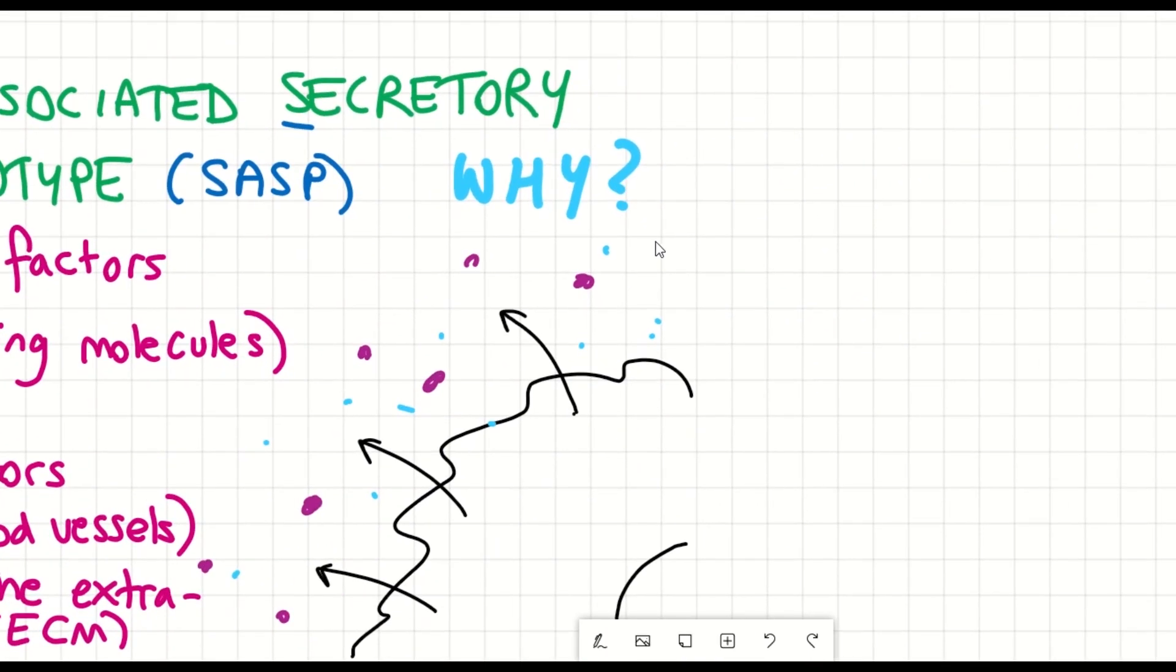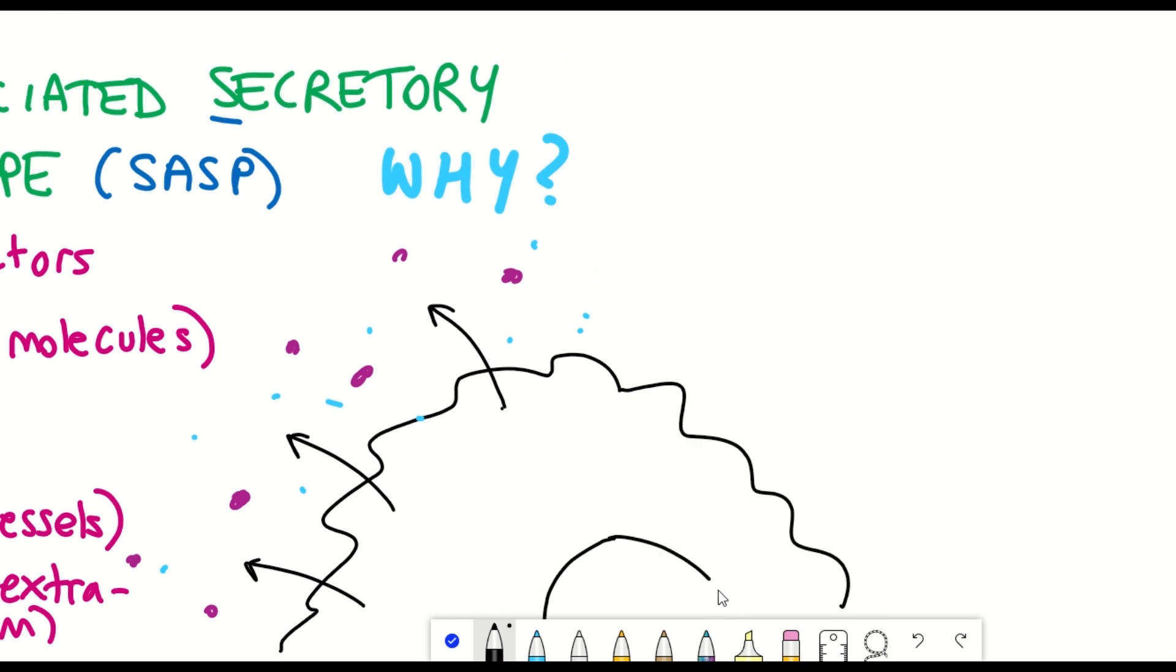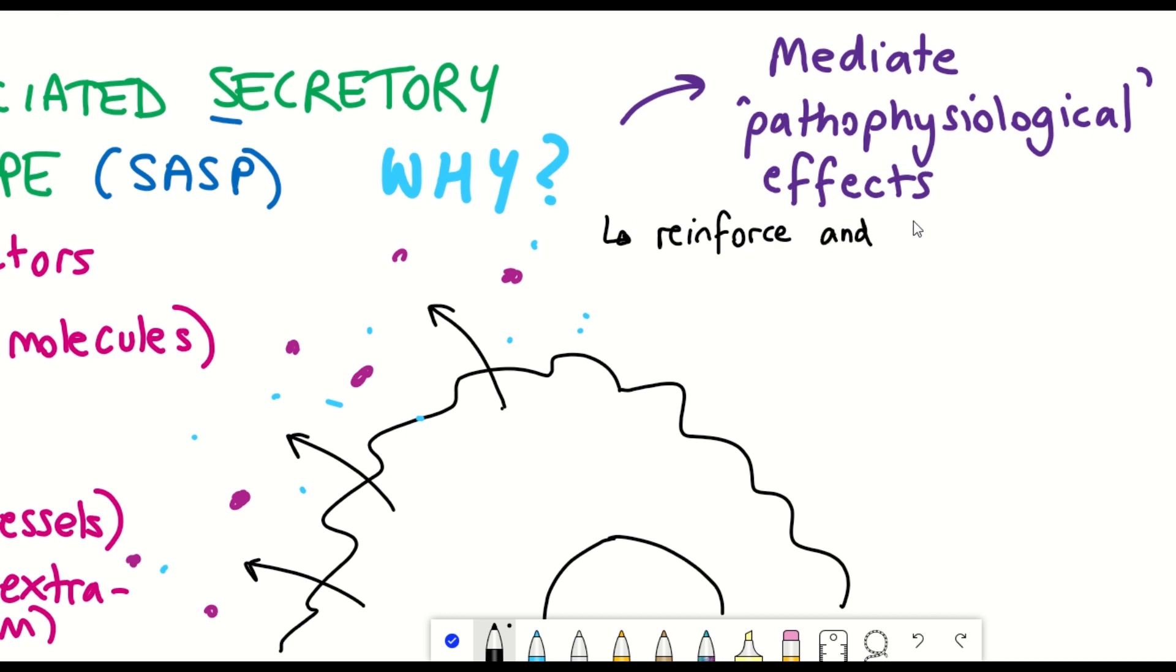But the question is why? So a function for each of the individual factors is far from complete, but currently the understanding is that the SASP can mediate the variety of pathological and physiological effects that are associated with senescent cells.